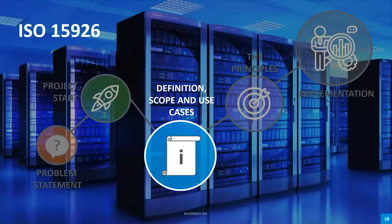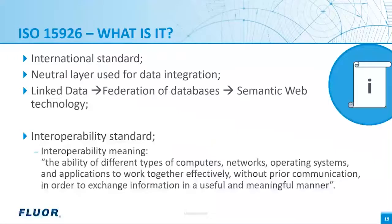Now I will explain what ISO 15926 actually is. ISO 15926 is an international standard. You can use it as a neutral layer to transport data into and out of — like an in-between language, just like we speak English but have different home languages. It can also be used to set up databases in this data model format, or used as a federation of databases — meaning multiple databases that can be linked to each other. This can be done because the standard uses linked data, meaning all data objects have an HTTP address which you can use for linking.